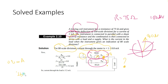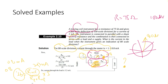Branch current Ib equals the opposite branch resistance divided by the total resistance, multiplied by total current. So 0.8 = (25 divided by (75 plus 25)) times I, giving 0.8 = (25/100) times I. Solving, I = 3.2 milliampere.